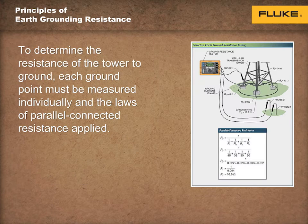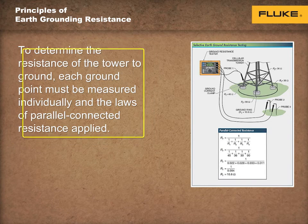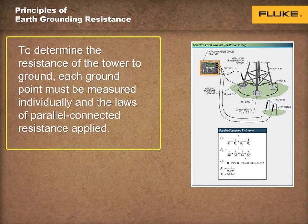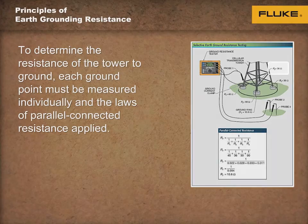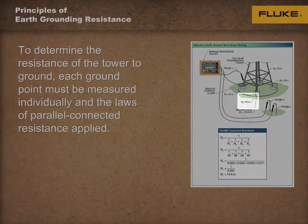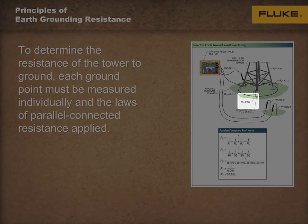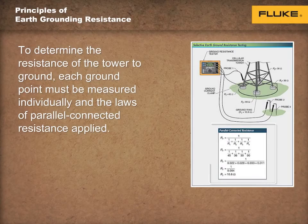To determine the resistance of the tower to ground, each ground point must be measured individually, and the laws of parallel connected resistance are applied. As shown on the screen, for example, if the measured resistances of the four test points — tower leg ground — are approximately 45 ohms, 36 ohms, 30 ohms, and 90 ohms, the effective resistance of the total ground system is 10.6 ohms.